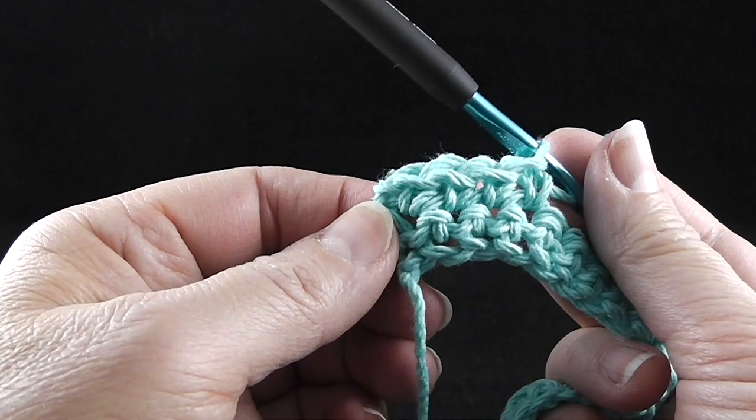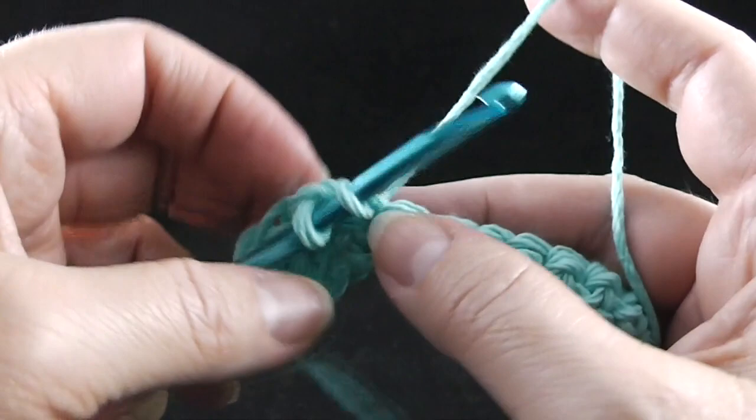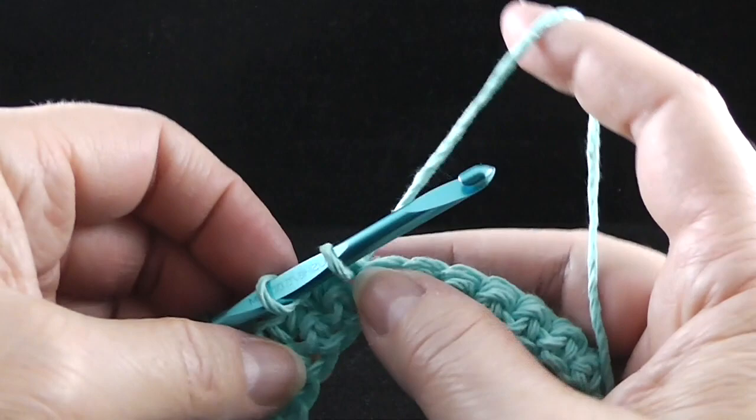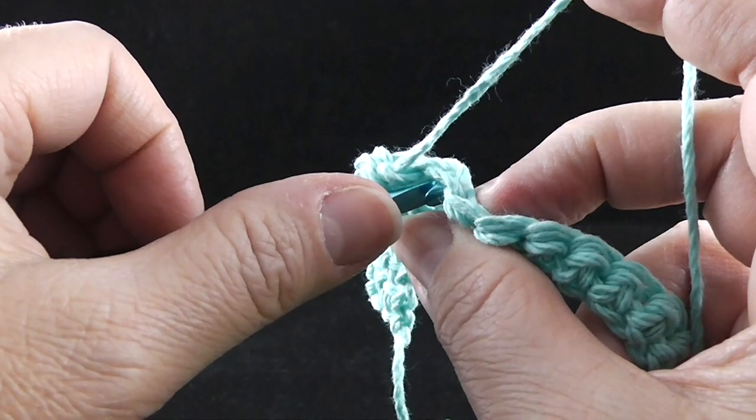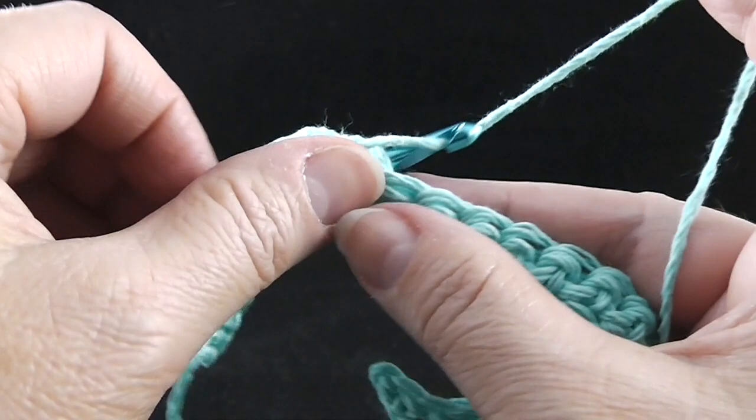And this is what it should start to look like. So yarn under both of those loops or under the V, yarn, pull up a loop, yarn over, pull through two. So I'm going to go ahead and do this all the way across and I'll show you what I have at the end. And by the way, you should have twenty four single crochets all the way across.